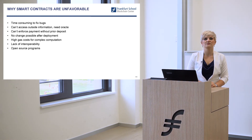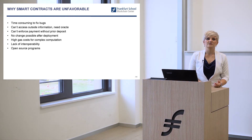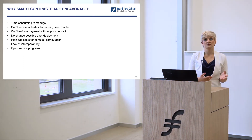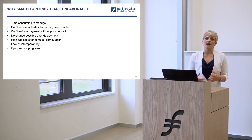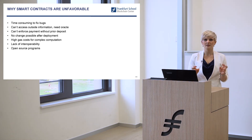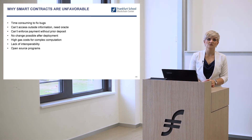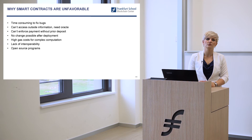Why are smart contracts unfavorable? They're very time-consuming. If they have a bug, you need to find that bug in the protocol or computer program, and if it's already on the blockchain you can't change it — you have to make a new version and upload it. They can't access outside information, meaning they need oracles to feed in data, which makes them vulnerable because the oracle comes from outside and you can't always be sure the data isn't manipulated. A smart contract can't enforce any payments without a prior deposit — if the contract is empty, you can't do much with it. Also, there's no change after deployment: if the smart contract is already in place between two parties, you can't change anything afterwards — you'd have to set up a whole new contract.